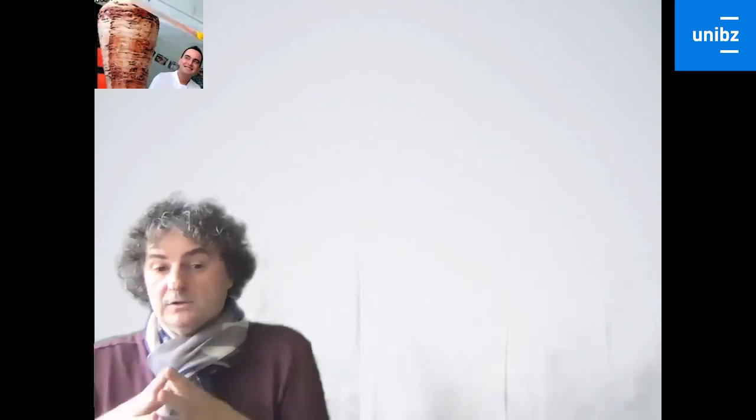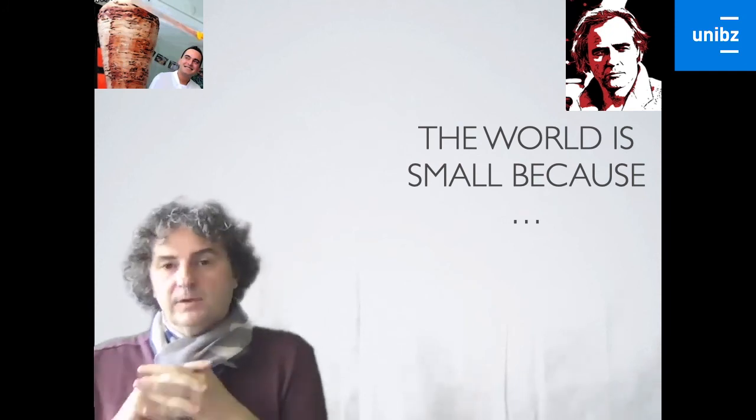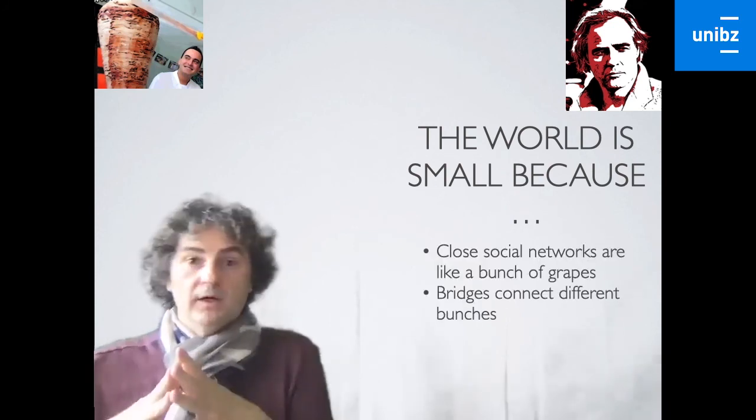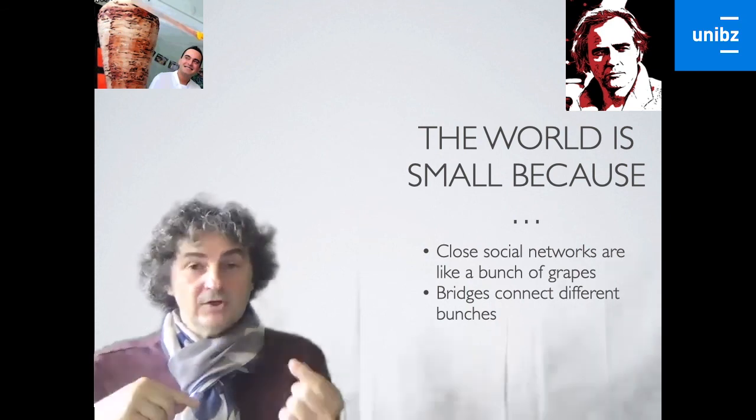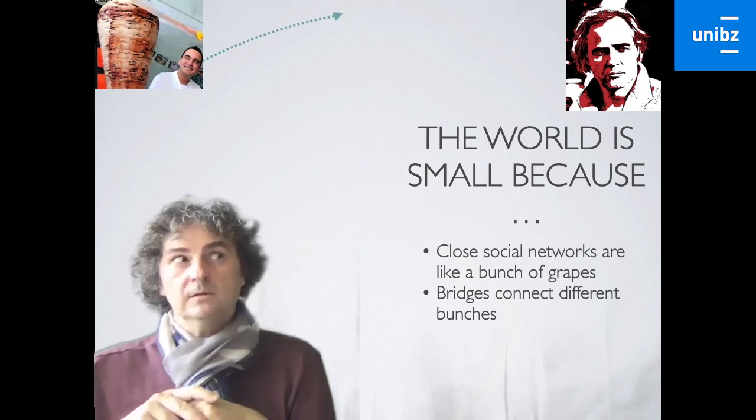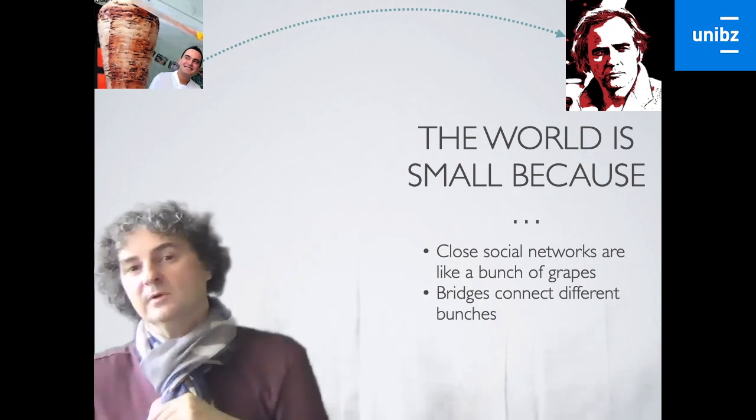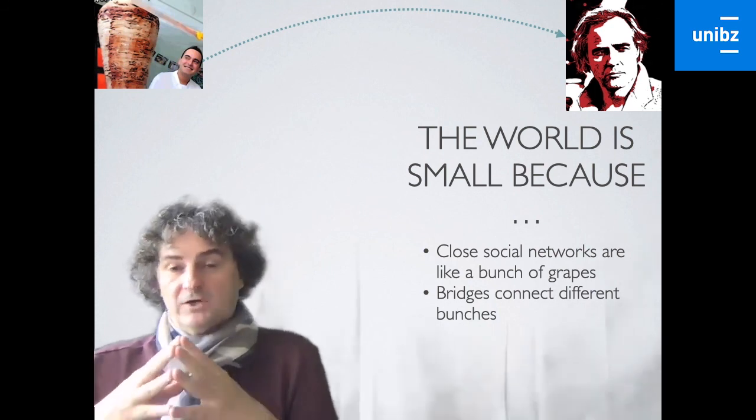So the important takeaway is the world is small because we have close social networks, which are like bunches of grapes where everyone is connected with everyone. And then we have bridges that connect different bunches. And this is why we have a small world phenomenon. So the next time where you meet someone and you make this discovery that you have a relationship in common, think about what might be the underlying network that actually connects me to this person and connects my friend to this person? Well, because this is how the small world phenomenon actually works.